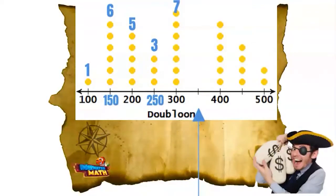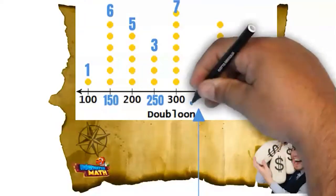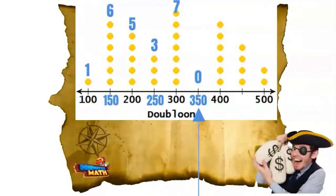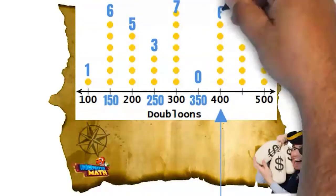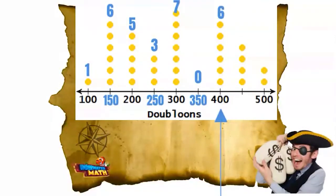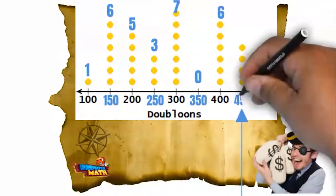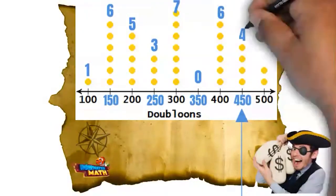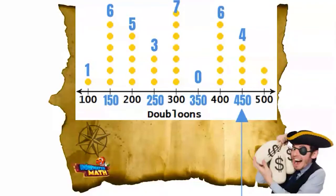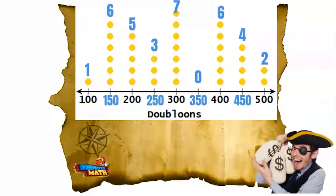300 is the number of doubloons in the most number of treasures. There are no dots above the next tick mark, so I have zero buried treasures with 350 doubloons. There are six dots above 400, so I have six buried treasures with 400 doubloons. There are four dots above the 450 mark, so four treasures with 450 doubloons. Finally, there are two dots above 500, so I have two buried treasures with 500 doubloons.